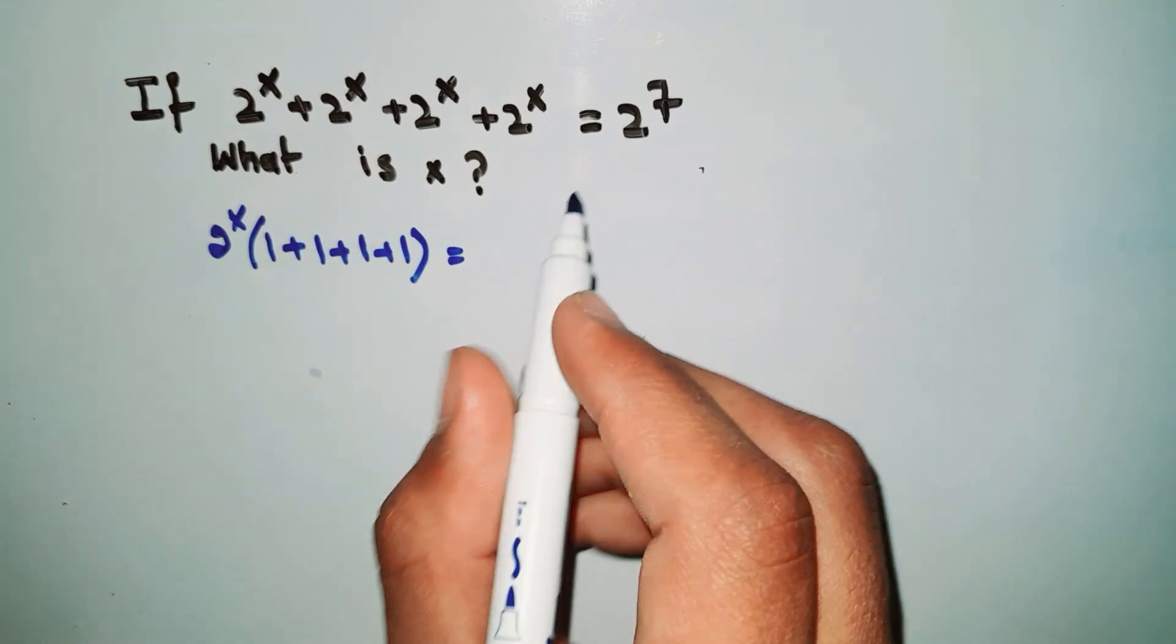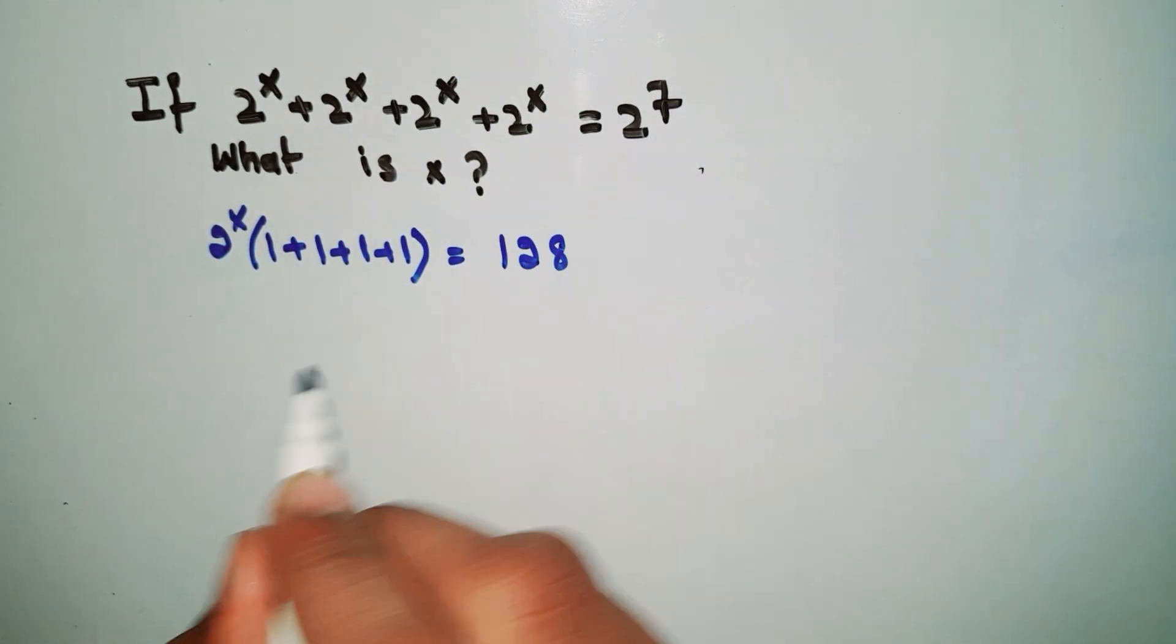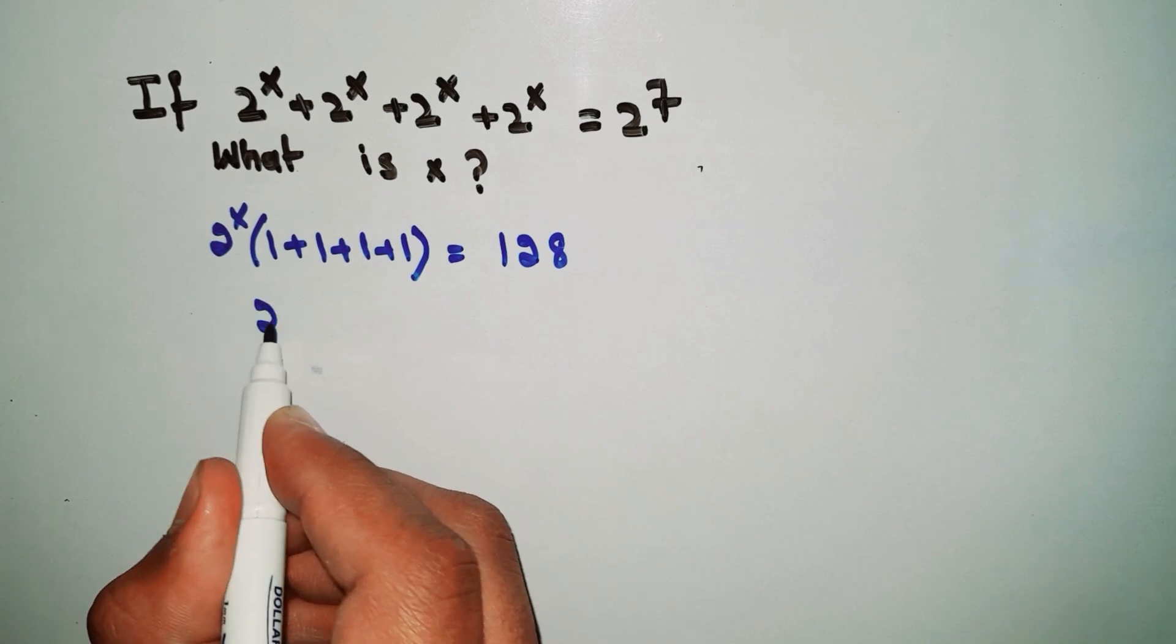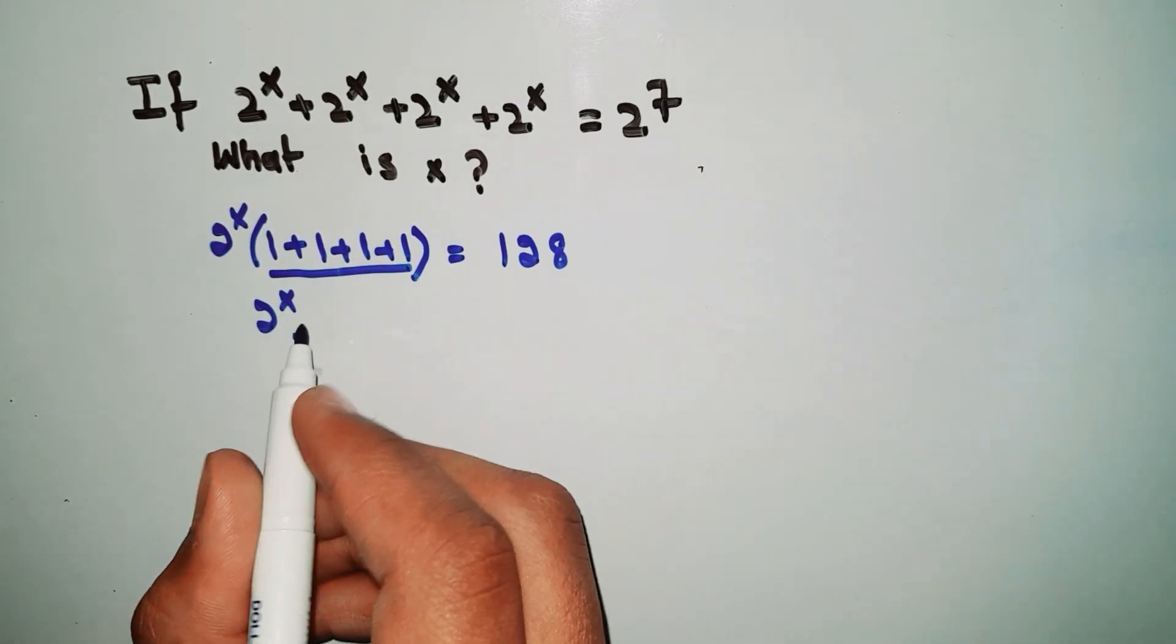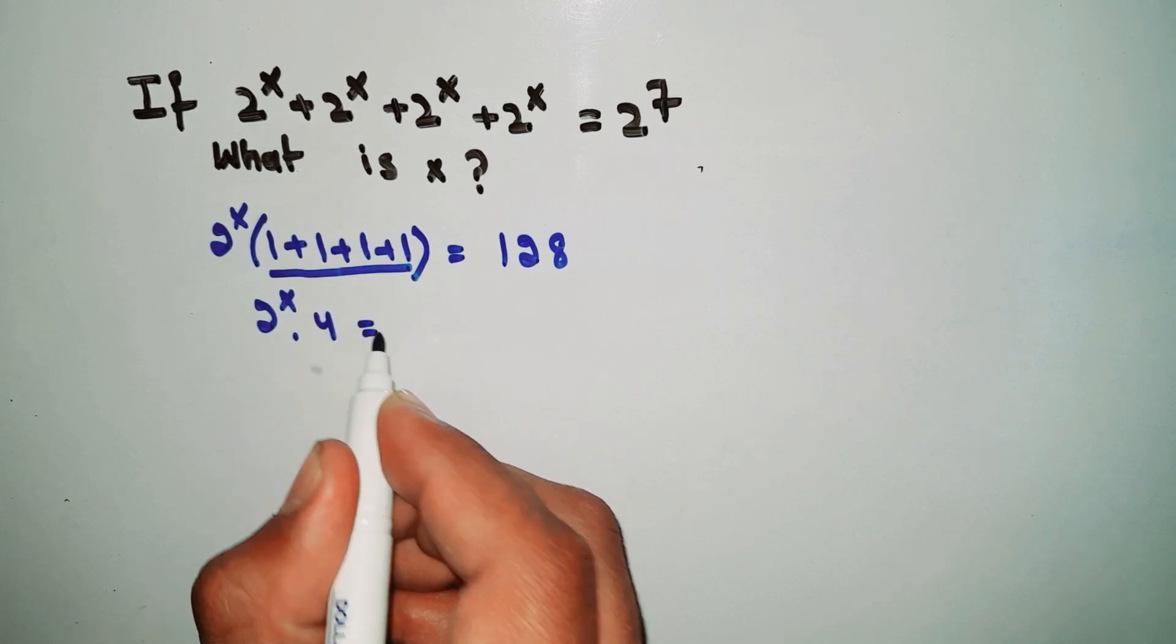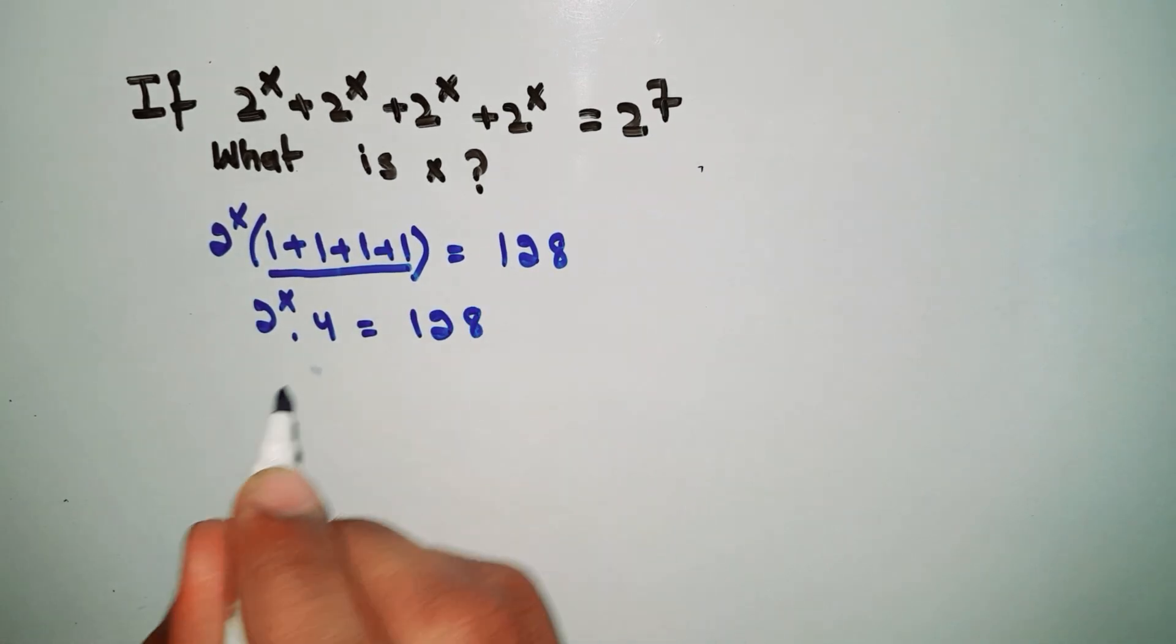We know that 2^7 equals 128. So now 2^x multiplied by (1 + 1 + 1 + 1), which equals 4, equals 128. Now we divide both sides by 4.